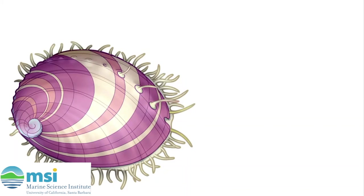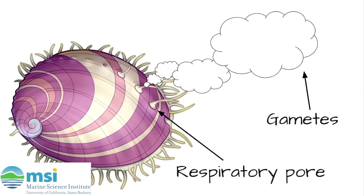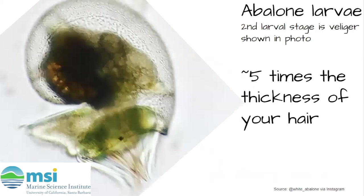So how do we handle this as scientists? First we have to understand how they reproduce. They use a method of reproduction called broadcast spawning, which means the males and females of the species release their gametes from their respiratory pores. Once released, they let the water column combine the gametes for them. When the female and the male gametes combine, it makes an abalone in its first larval stage of life.